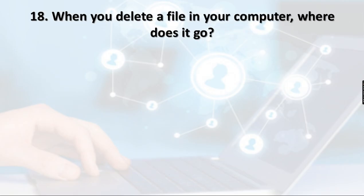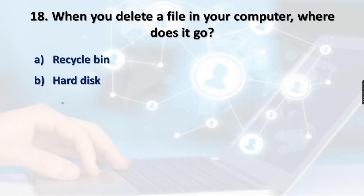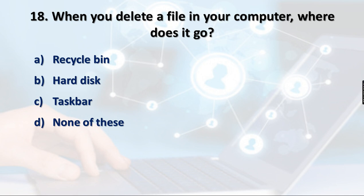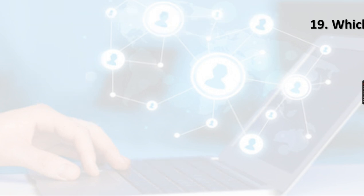Question 18: When you delete a file in your computer, where does it go? When you delete a file, it goes into the Recycle Bin. Deleted files are present in the Recycle Bin, not the hard disk — the hard disk stores saved files. The Task Bar holds applications and the start button is used to launch programs. Option A, Recycle Bin, is the right answer.